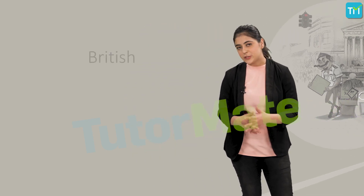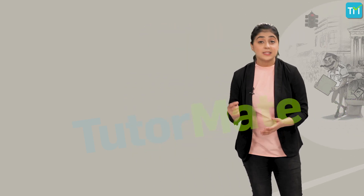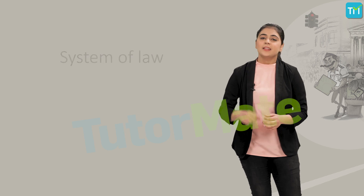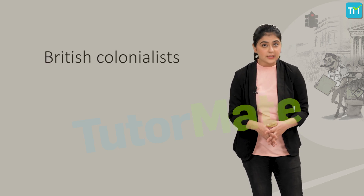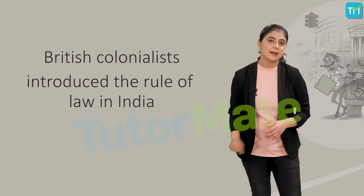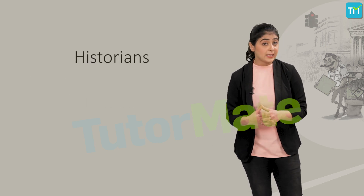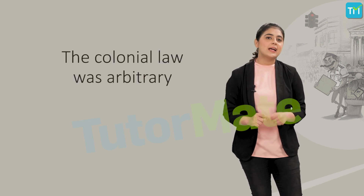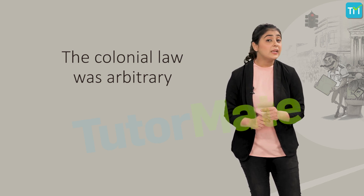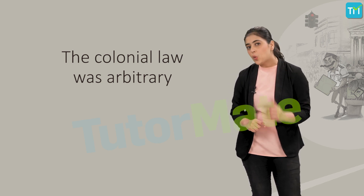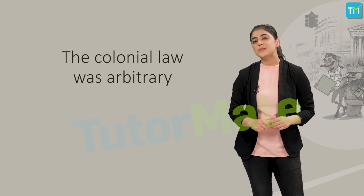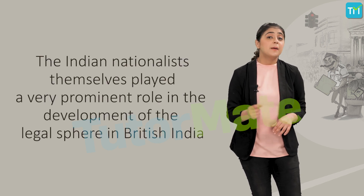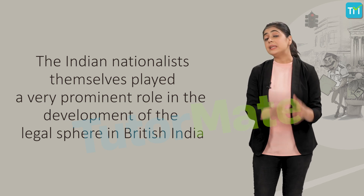After the arrival of the British in India, this slowly began to change. The system of law further evolved according to the changing times. Many believed it was the British colonialists who introduced the rule of law in India, though many historians have disputed this on several grounds. Two are prominent: first, the colonial law was arbitrary — they only used their power for their own selfish reasons and not for smooth administration. Second, the Indian nationalists themselves played a very prominent role in the development of the legal sphere in British India.